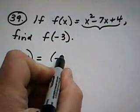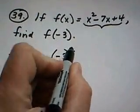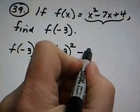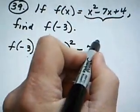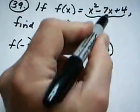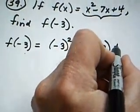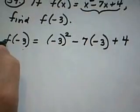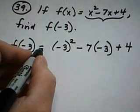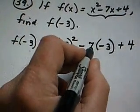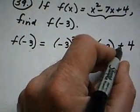So we're going to take negative 3 and square it, that's this x value squared, minus 7 times negative 3. We replace this x with negative 3, and then of course we get a plus 4. So f of negative 3 is equal to negative 3 quantity squared minus 7 times negative 3 plus 4.